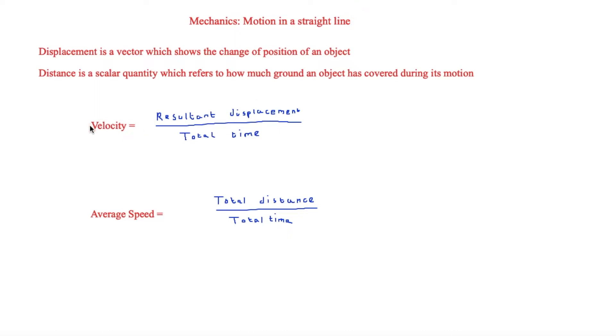To work out velocity, you do resultant displacement over total time, and to work out average speed you do total distance over total time.